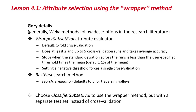The gory details of the wrapper method: in general, the Weka implementations follow descriptions in the research literature. It tries to do a five-fold cross-validation by default, not ten-fold. But it doesn't necessarily do all five folds — it does at least two and up to five runs, stopping when the standard deviation is less than a user-specified threshold. Setting a negative threshold, which is what we did, forces a single cross-validation each time. The best first search method is the default, and search termination defaults to five for traversing valleys.